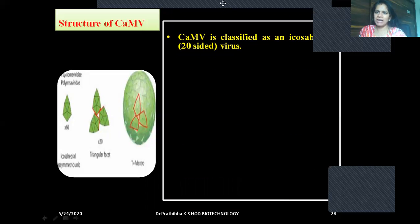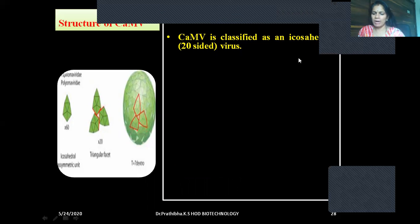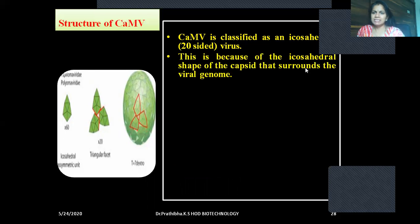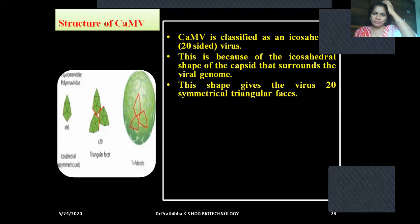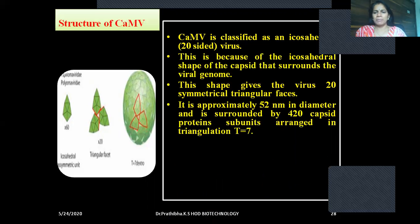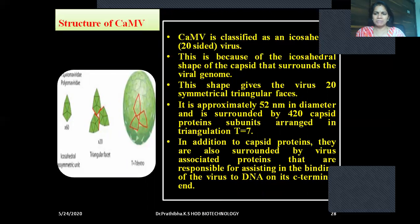CaMV is classified as an icosahedral, 20-sided virus, because of the icosahedral shape of the capsid that surrounds the viral genome. This shape gives the virus 20 symmetrical triangular faces. It is approximately 52 nm in diameter and is surrounded by 420 capsid protein subunits arranged in triangulation T equals 7. In addition to capsid proteins, they are also surrounded by virus-associated proteins responsible for assisting the binding of the virus to DNA on its C-terminal end.